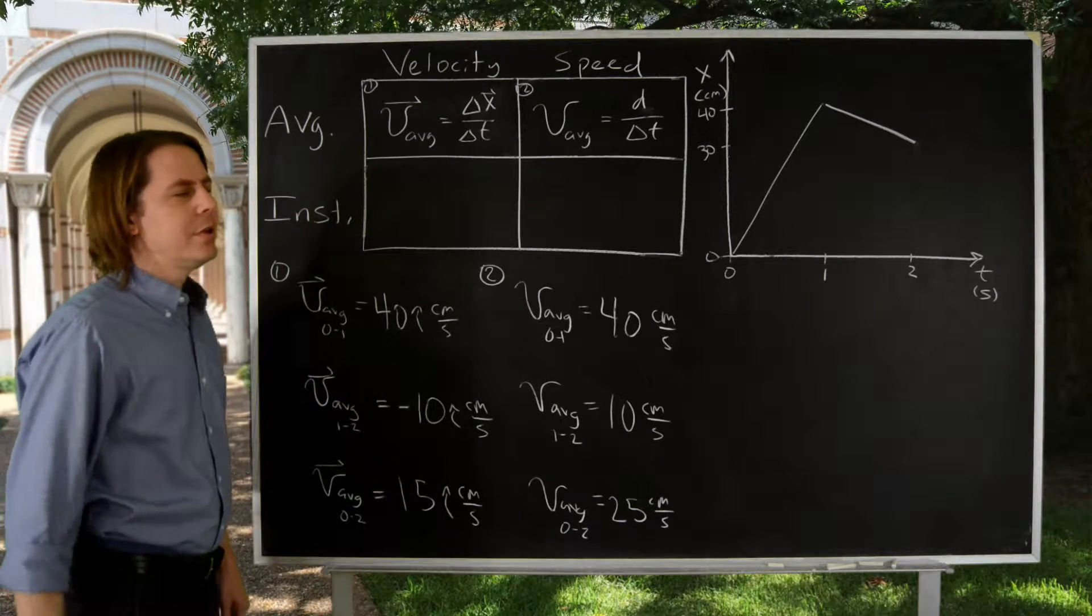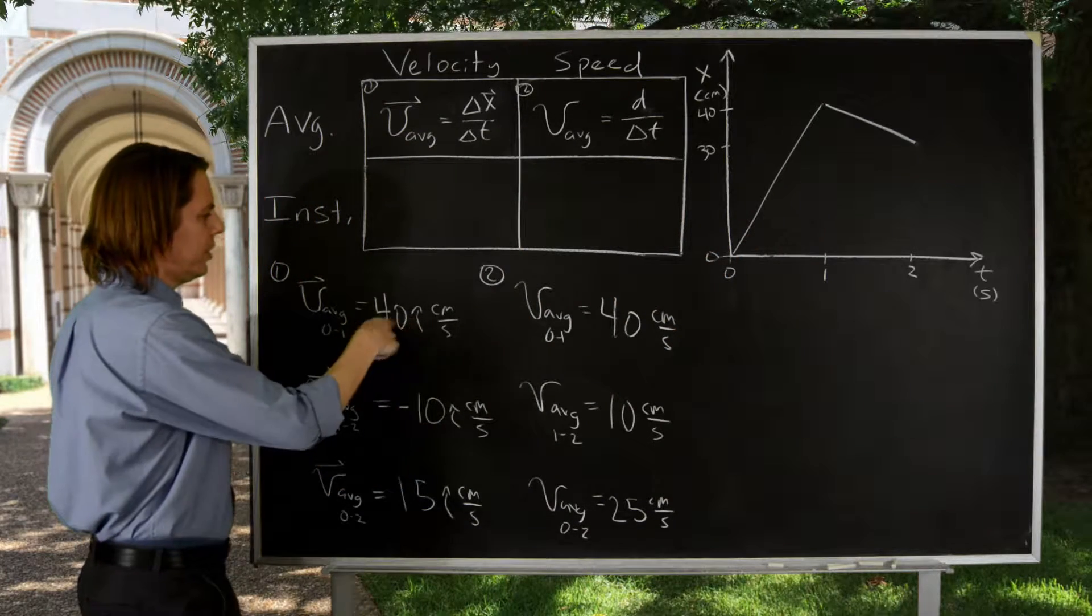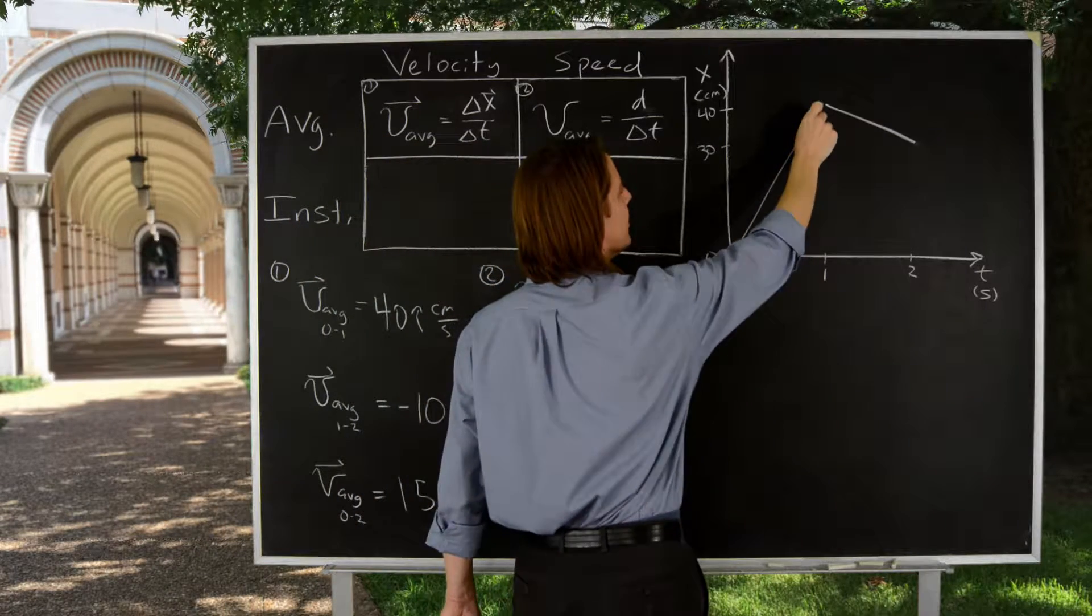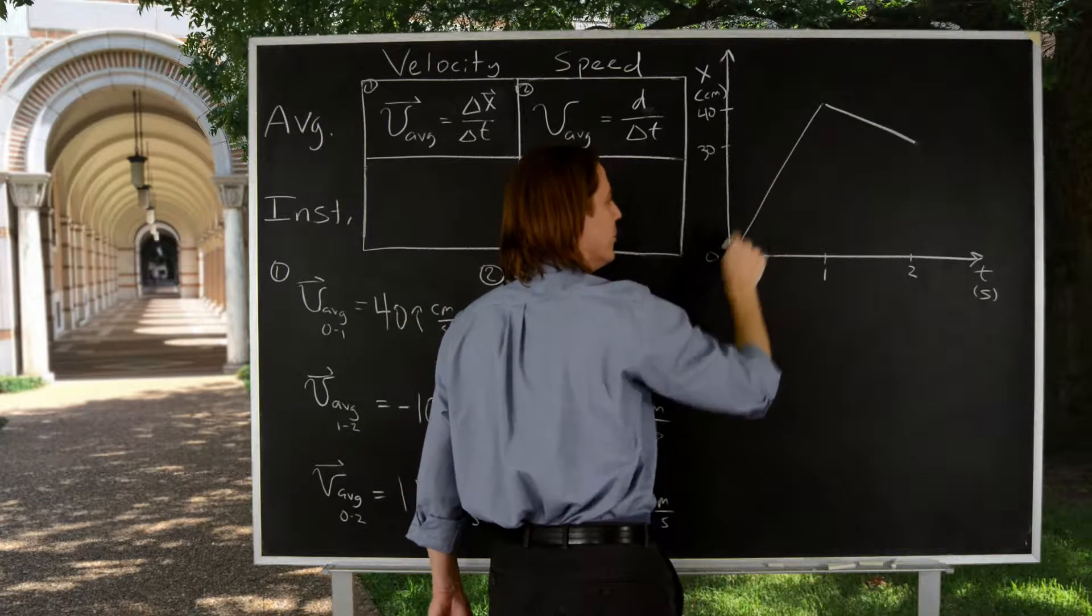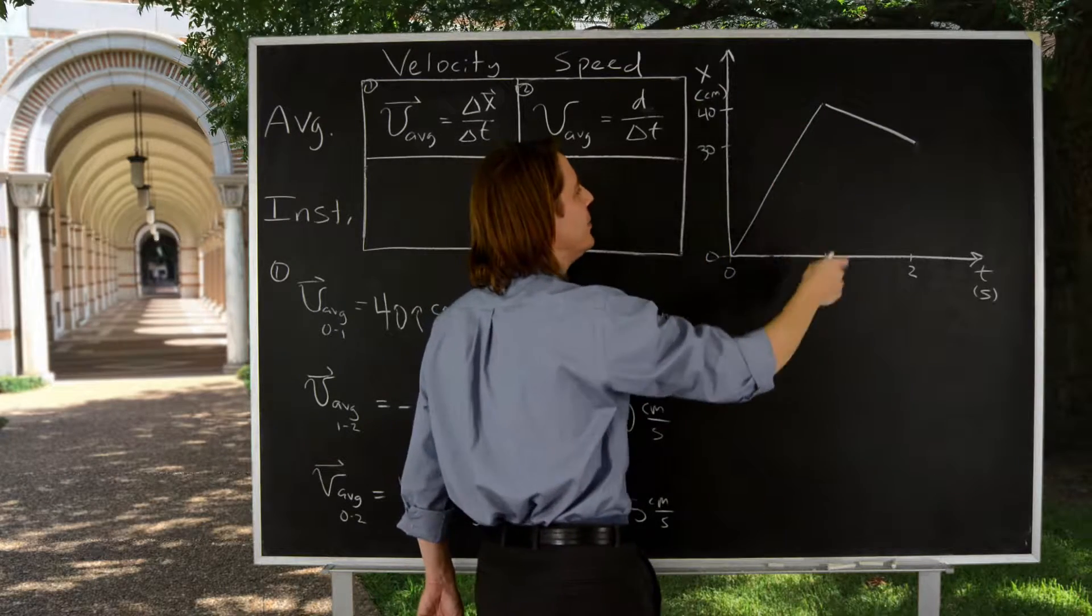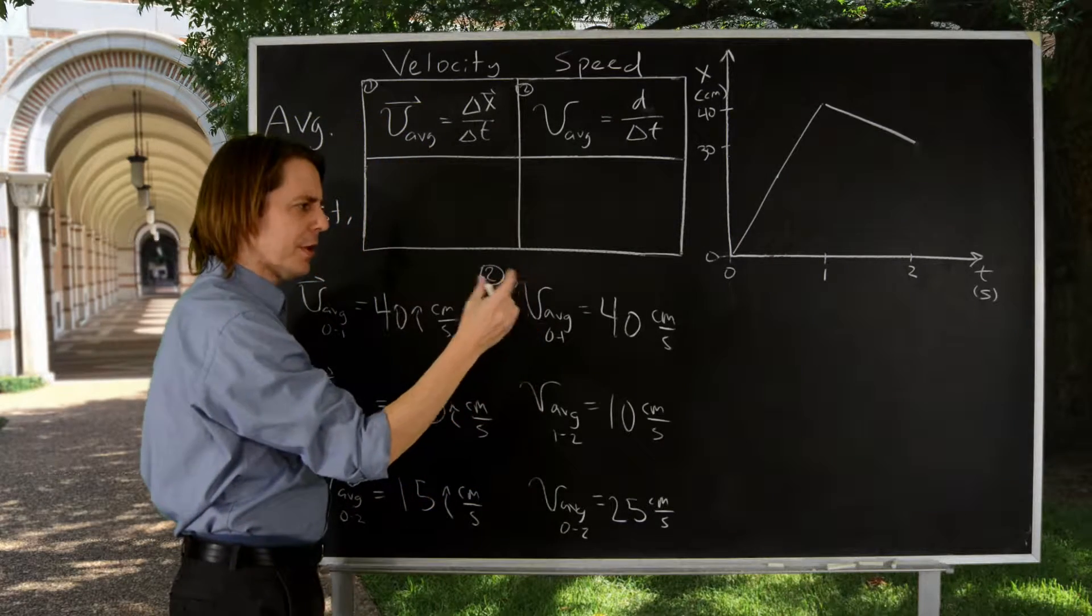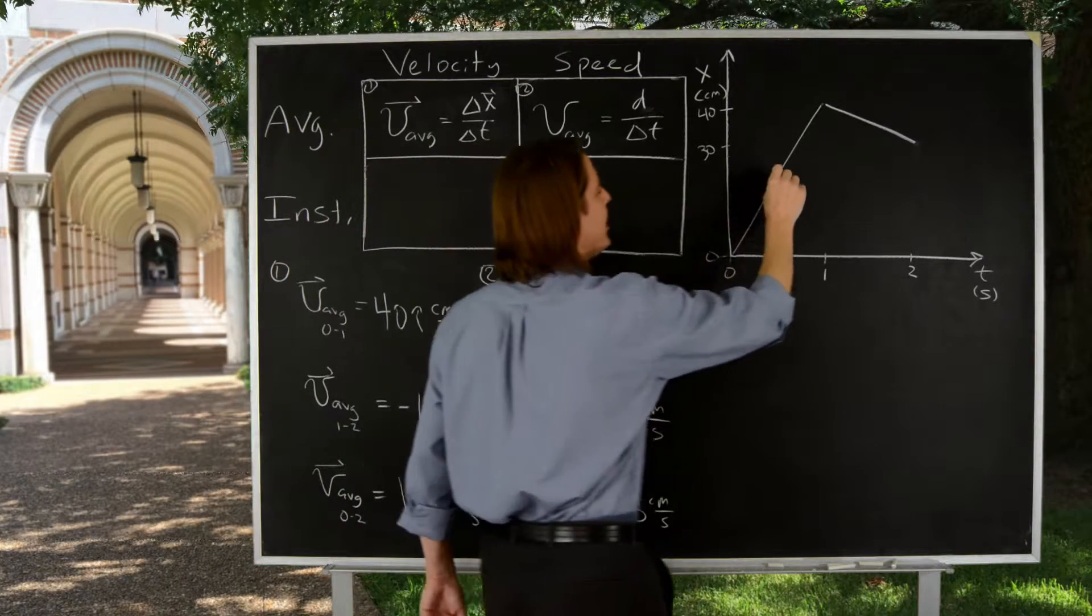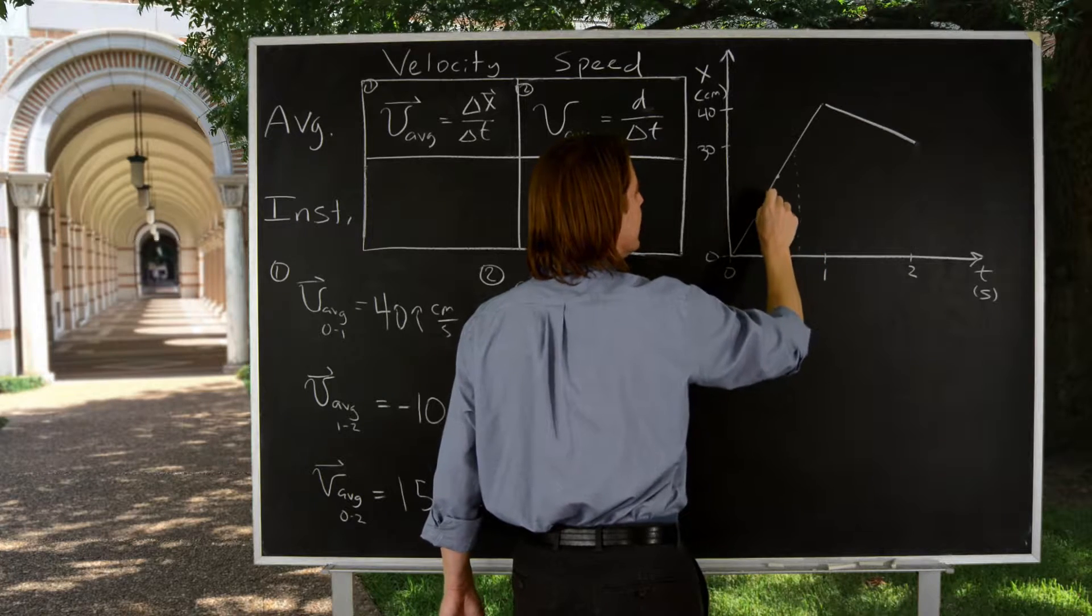Now, instantaneous. We said that the average velocity from 0 to 1 was 40. And you can kind of tell since this is a straight line, it's the same speed all the time. Anywhere in this interval, it's going 40. So instantaneous means let's pick a certain place and say, what is the speed right there? Not over a thick interval, but at a certain time. The way you can kind of think about getting it is, instead of thinking about 0 and 1, let's just shrink that interval down a little bit.